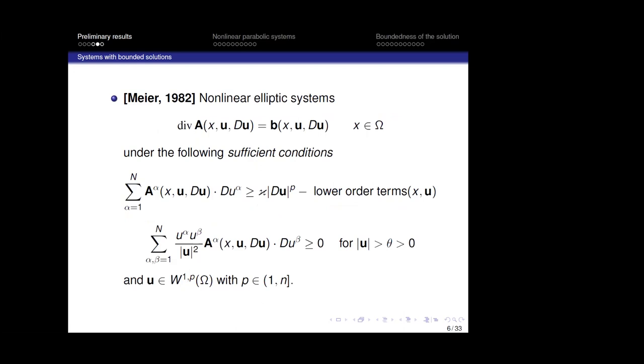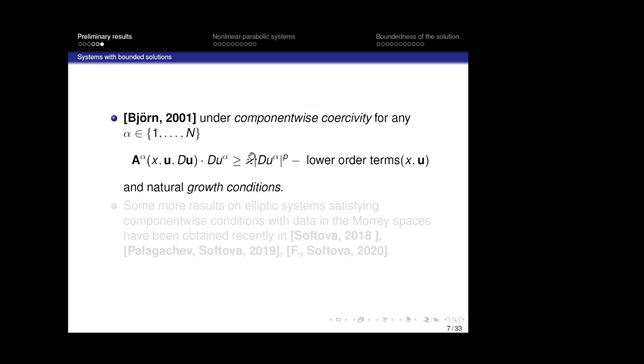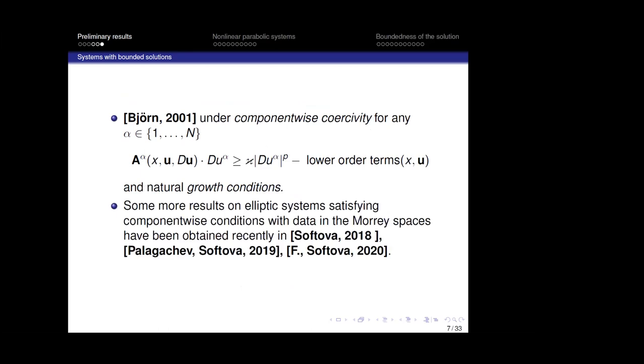The results of Meier in 1982 for non-linear elliptic systems under sufficient conditions, the results of Björn under component-wise coercitivity conditions for any alpha between 1 and N and natural growth conditions. I remember that some more results on elliptic systems satisfying component-wise conditions with data in Morrey spaces have been obtained recently by Softova and me.